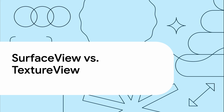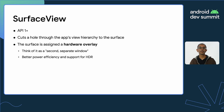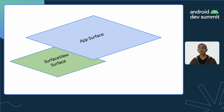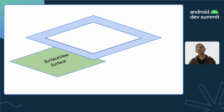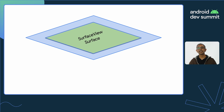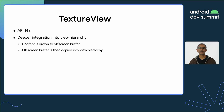Let's talk about SurfaceView and TextureView, which are two different ways of embedding content into your app's view hierarchy. SurfaceView has been around since the beginning of Android. The core concept is that it cuts a hole through your app's view hierarchy down to a surface, and that surface has an assigned hardware overlay — you can think of this as a second window that is more power efficient and supports high dynamic range rendering. TextureView, on the other hand, has been available since API 14. It's meant for deep integration into the view hierarchy, so content is drawn to an off-screen buffer and copied back into the view hierarchy. This is an extra operation, so it's less efficient than a SurfaceView.